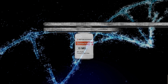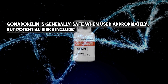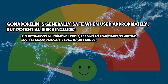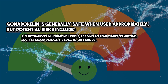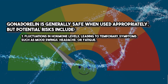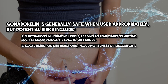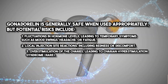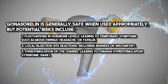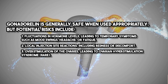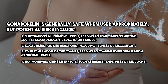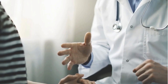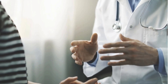Gonadurilin is generally safe when used appropriately, but potential risks include: fluctuations in hormone levels leading to temporary symptoms such as mood swings, headache, or fatigue; local injection site reactions including redness or discomfort; overstimulation of the ovaries leading to ovarian hyperstimulation syndrome, which is rare; and hormone-related side effects such as breast tenderness or mild acne. Close monitoring can help mitigate these risks and ensure a safe treatment course.